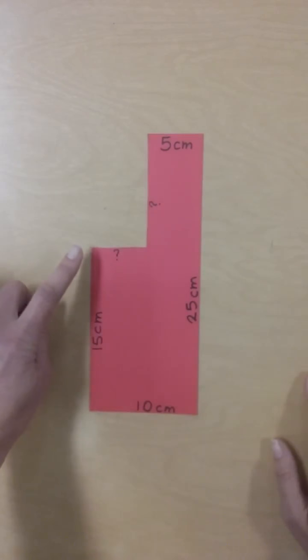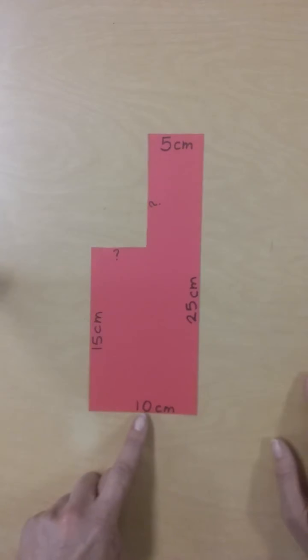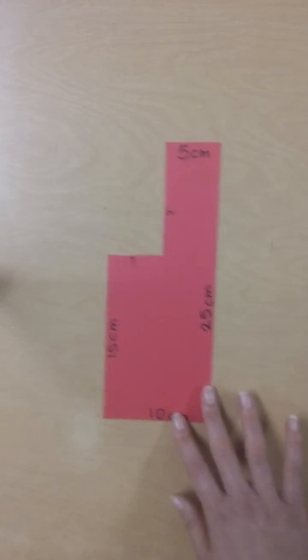So when I add 5 plus 10 plus 5 plus 25 plus 10 plus 15, I'm going to do that in my head, I get 70 centimeters. So the perimeter of this object is 70 centimeters. And that's how you find perimeter.